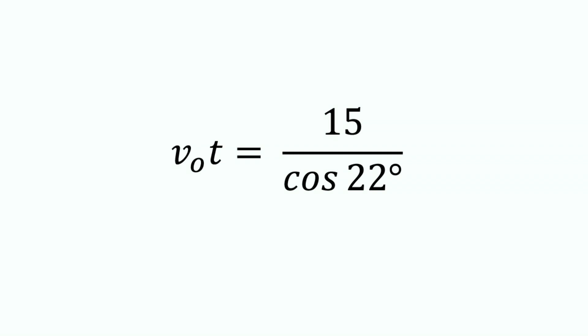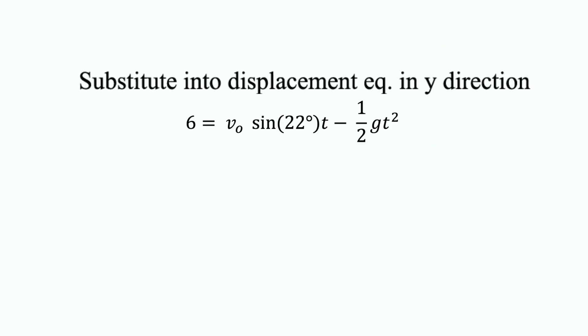v-naught t equals 15 divided by cosine 22. I will take that value and substitute it into the displacement equation in the y direction.